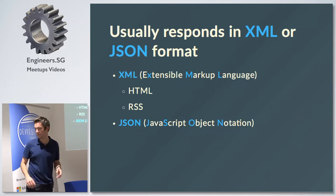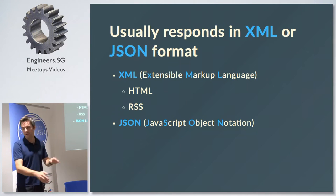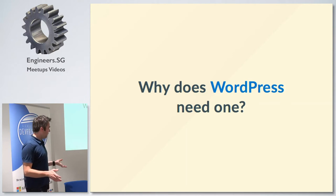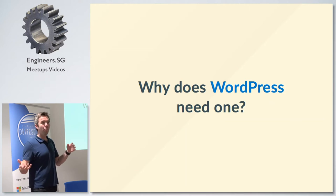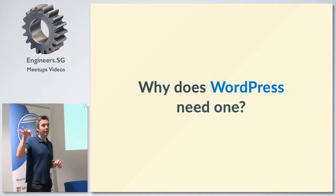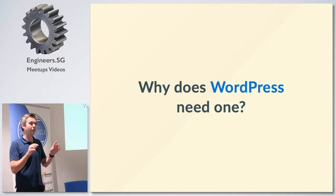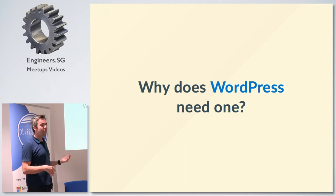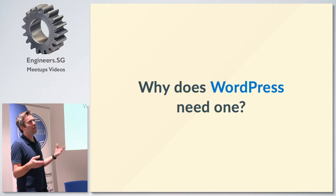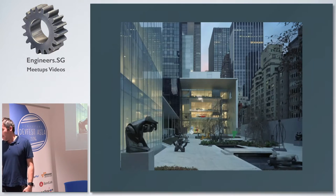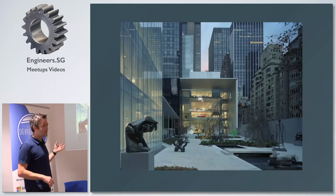JSON seems to be the best balance between human-readable and fast loading. So why does WordPress need a REST API? If you've built themes or plugins, you're probably used to using WP_Query or template tags to get titles, content, and dates out of WordPress posts. You might be thinking: what's the point of another way of doing it? I'm going to use an example.